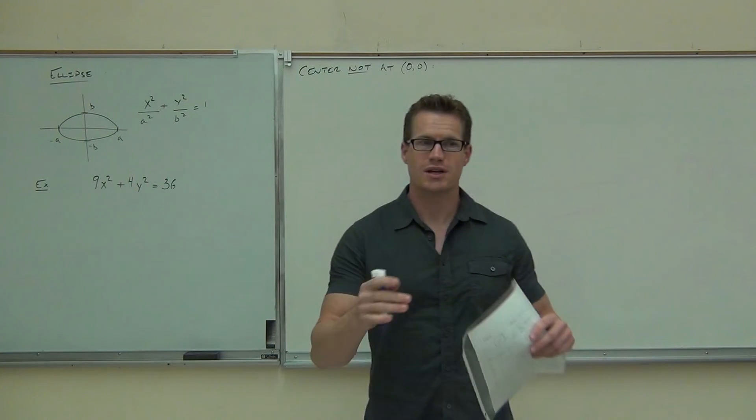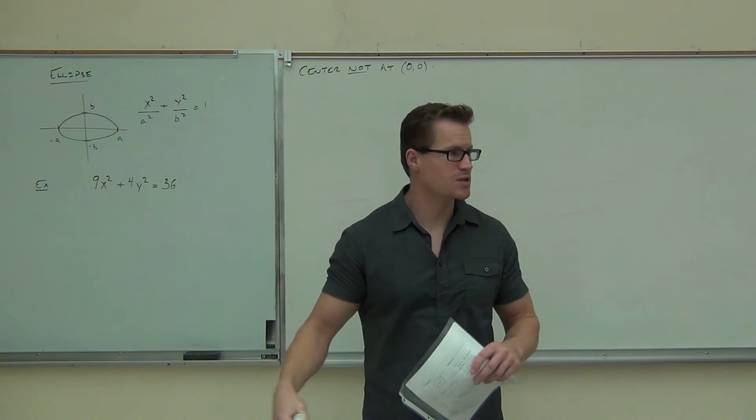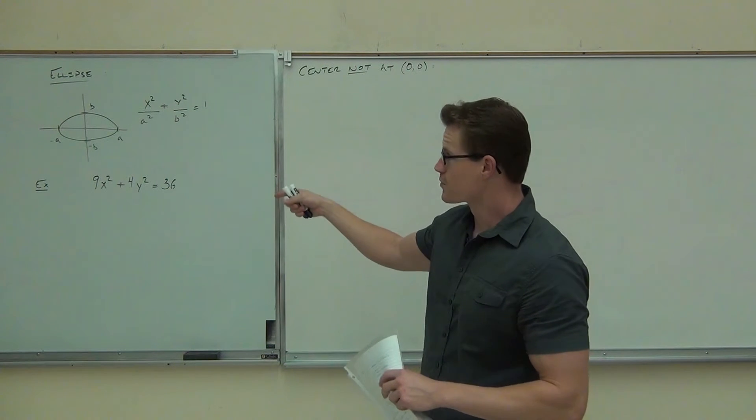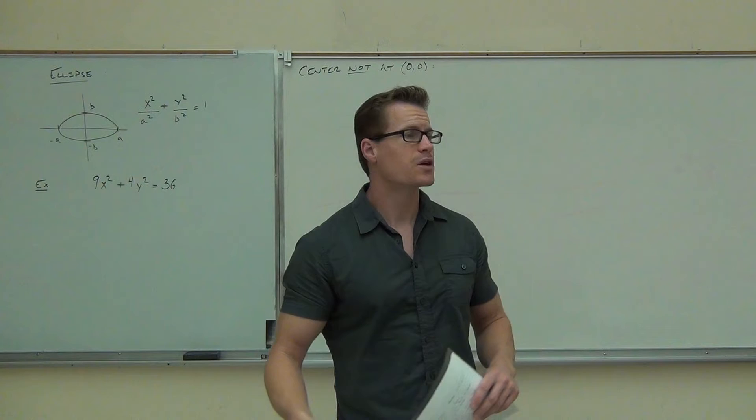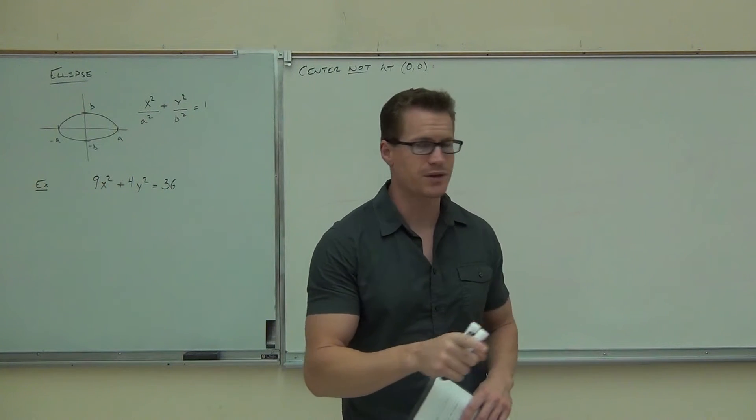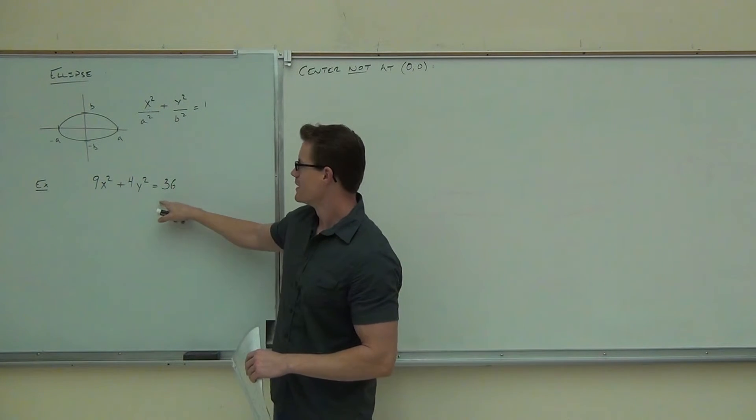All right, so we're talking about conic sections again, and we have this thing called the ellipse. Yesterday we went over the formula for ellipse, how to determine whether something is a circle or an ellipse. So we're going to do one more example talking about this. Let's look back at this example.